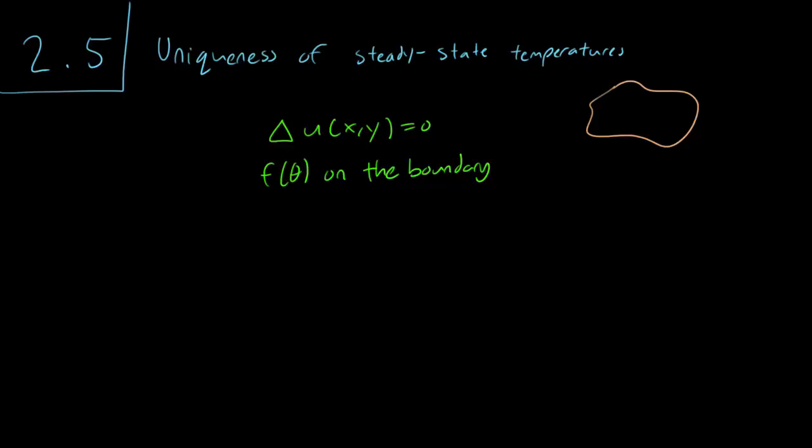So assume another solution v(x,y). Then we have another function v(x,y) whose Laplacian is zero and such that the boundary values of v is also F theta. In other words, u and v are two solutions of the Laplace equation with the same boundary conditions.